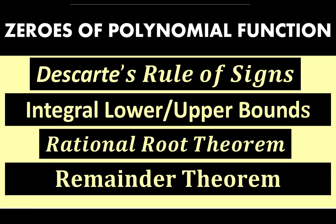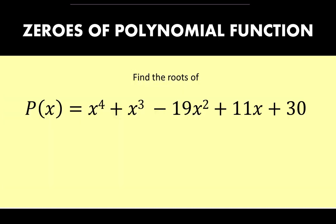Let's talk about finding the zeros of a polynomial function using the Descartes rule of signs, the integral lower or upper bounds, the rational root theorem, and the remainder theorem. Here is our problem for today: find the roots of p(x) = x⁴ + x³ - 19x² + 11x + 30. In order to find the roots of this polynomial function, we can employ some theorems that can narrow down our search for the roots.